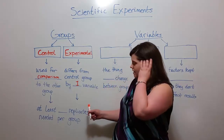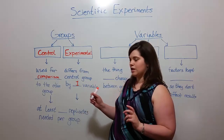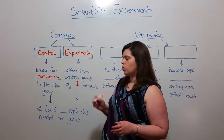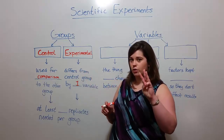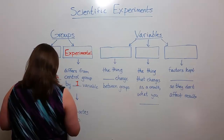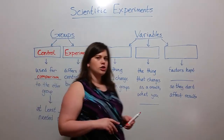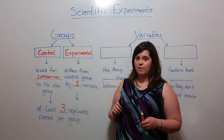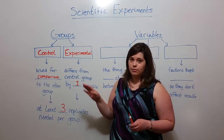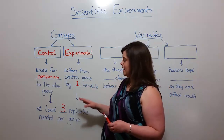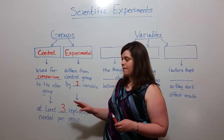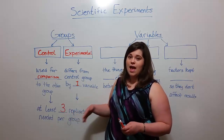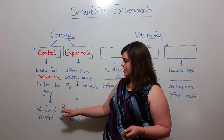Sample size is the number of replicates needed in each group. In any good scientific experiment, each group will contain at least three replicates. For example, let's say that you were going to conduct a scientific experiment comparing two different groups of plants. Each of these groups needs to have a minimum of three plants per group — and more than three plants is even better, but at least three.